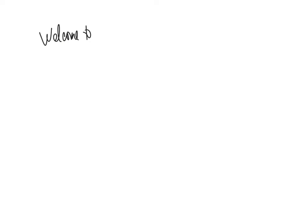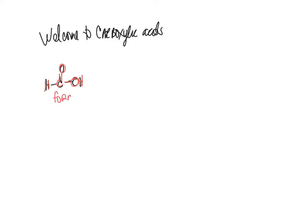Welcome to carboxylic acids. At this point, you probably know what the carboxylic acid functional group looks like. Let's look at some carboxylic acids and give them names. You have your carbonyl and you have an OH, so this carbon is connected to two oxygens. If you have a hydrogen on the other side, this is the smallest carboxylic acid you can have, and that's formic acid.